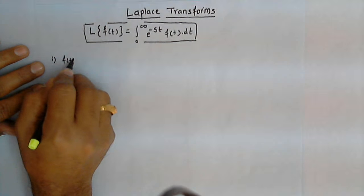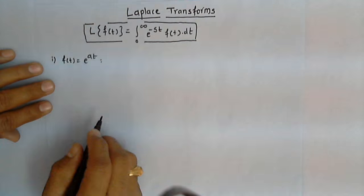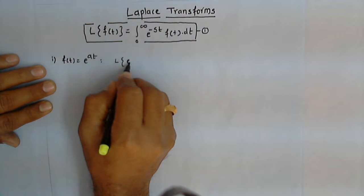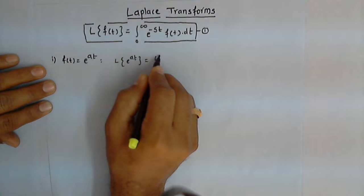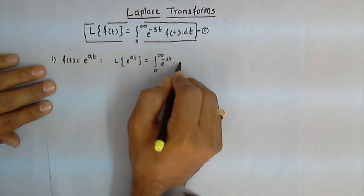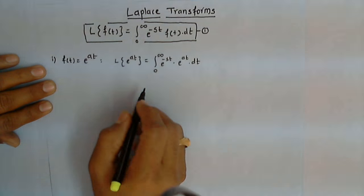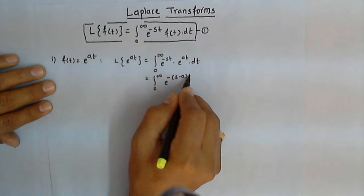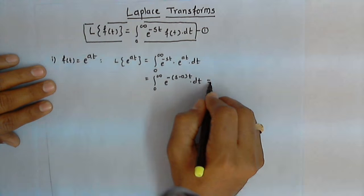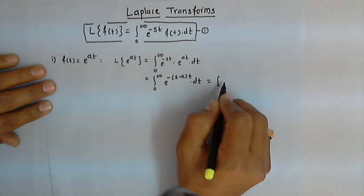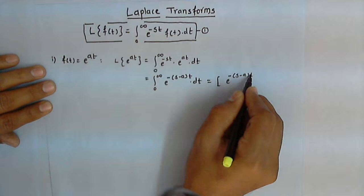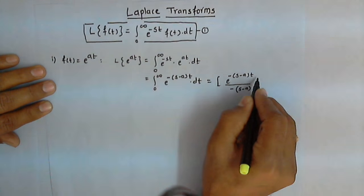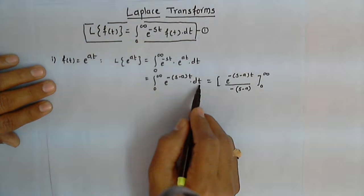Let f(t) be e raised to a t. By definition, the Laplace transform of e raised to a t is the integral from 0 to infinity of e raised to minus s t times e raised to a t dt. This gives us the integral from 0 to infinity of e raised to minus (s minus a) times t dt. We integrate this as e raised to minus (s minus a)t upon the derivative of the power, which is minus (s minus a), because we are integrating with respect to t.